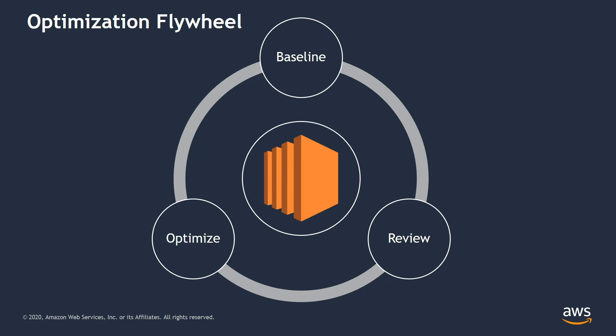A flywheel, for those unfamiliar with the term, is a large wheel or cog used in engines or heavy machinery. Its purpose is to efficiently store then distribute energy to other parts of the machine. A flywheel by nature is difficult to get moving due to its large size, but once started and properly maintained, can provide efficient power. If you can imagine that the EC2 server icon pictured in the middle is a perfectly optimized Windows workload, then the steps outside are the continual review process we need to build and keep the momentum.